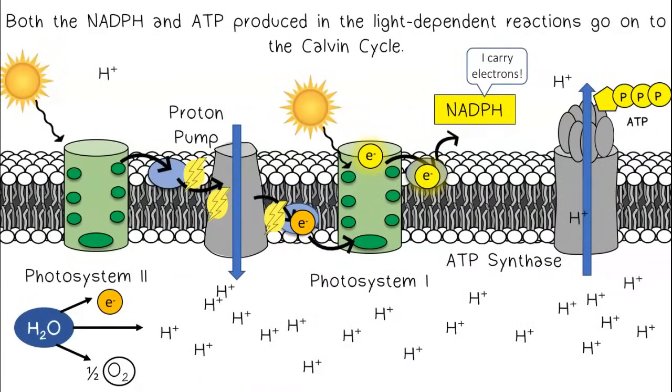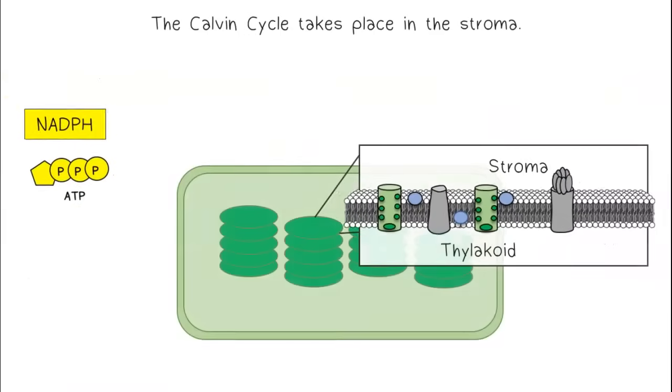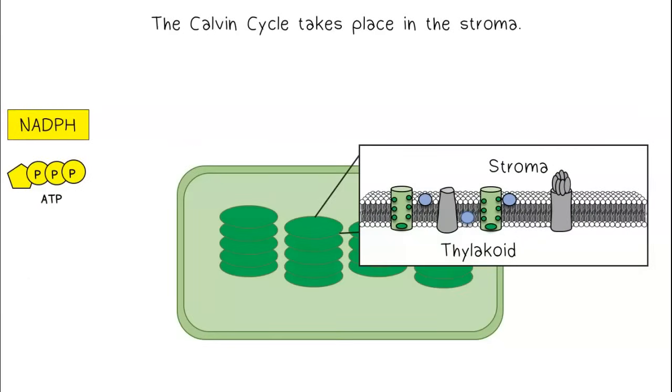Both the NADPH and ATP produced in the light-dependent reactions go on to the Calvin cycle. The Calvin cycle takes place in the stroma.